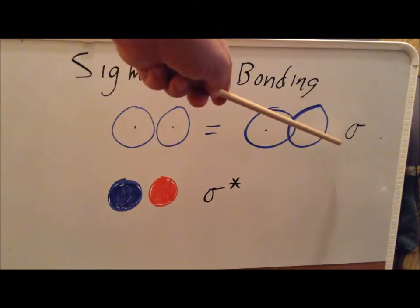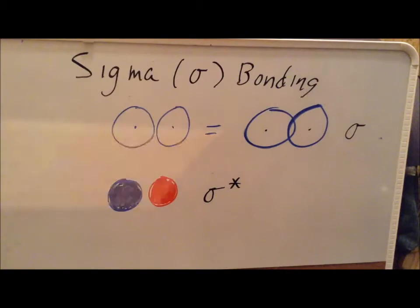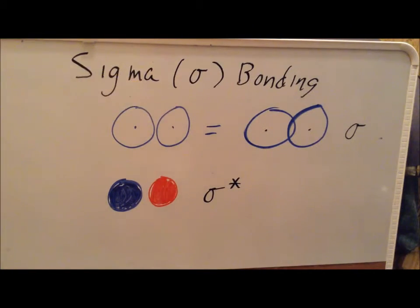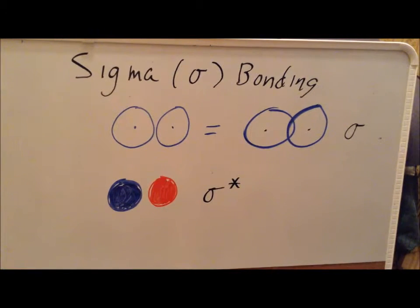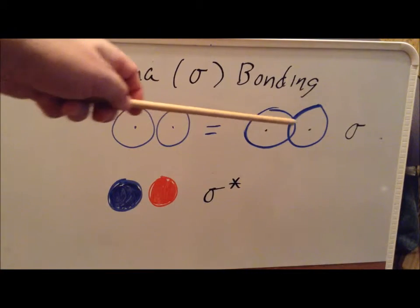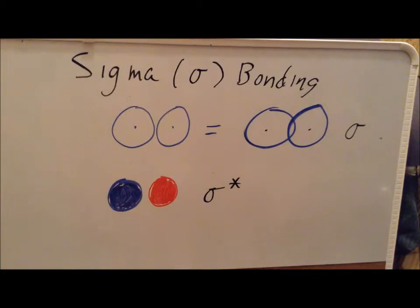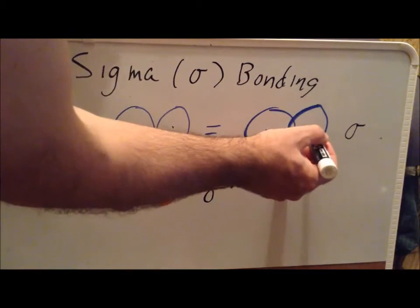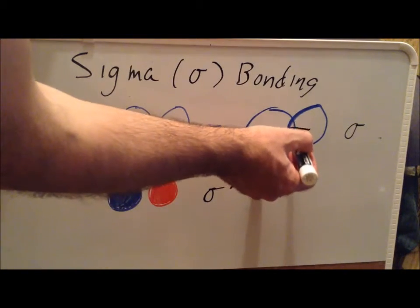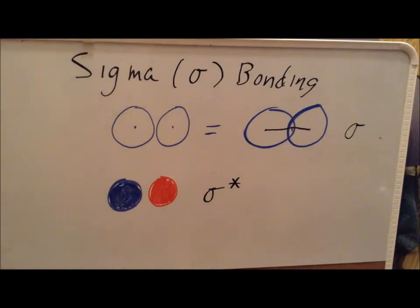We use the symbol sigma for this type of bond. Notice both circles are open — white — so since they have the same color, we interpret them as being the same phase. One way to recognize a sigma bond is that if we draw a line from one nucleus to the other, that line passes through the overlap region. When that's true, we have a sigma bond.